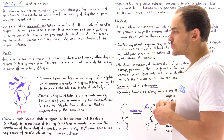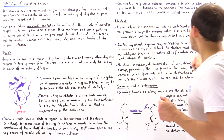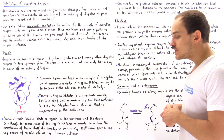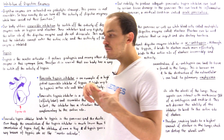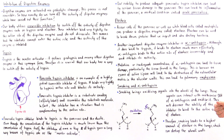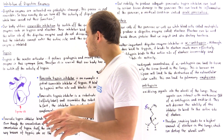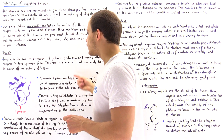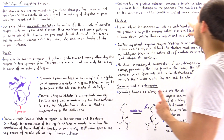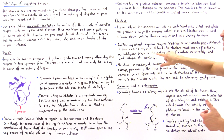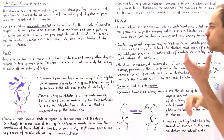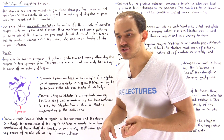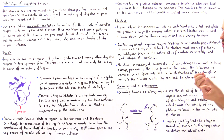What happens if alpha-1 antitrypsin is inactivated — mutated or produced in inadequate supply? Unlike inadequate pancreatic trypsin inhibitor, which leads to acute pancreatitis, destroying or mutating alpha-1 antitrypsin results in an excess of active elastase. What exactly does that lead to?